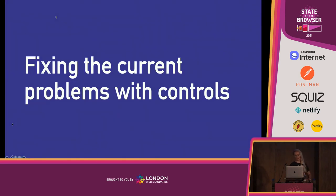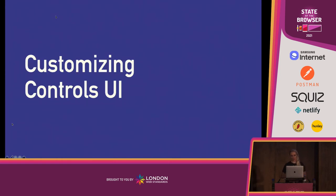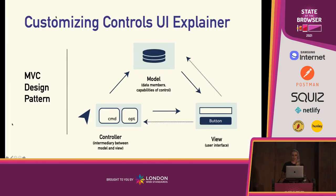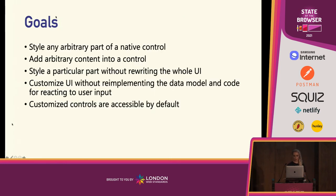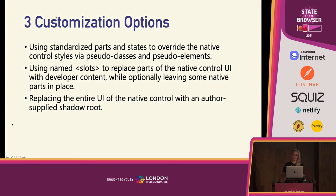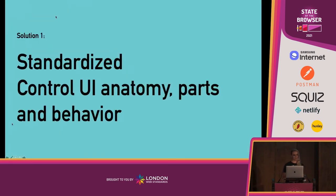Now let's talk about the thing I'm most excited about: fixing the current problems with controls, styling, and extending them. Last year in August 2020, an explainer with proposed solutions for enabling customization of controls UI was released by Chrome, Edge, and the Open UI working group. The proposal uses the MVC design pattern where the form control is made up of three distinct parts: a model, a view, and a controller. The goals revolve around enabling as much customization as possible while reducing the overhead for the developer. We're proposing three different solutions offering a range of flexibility depending on what the developer wants.